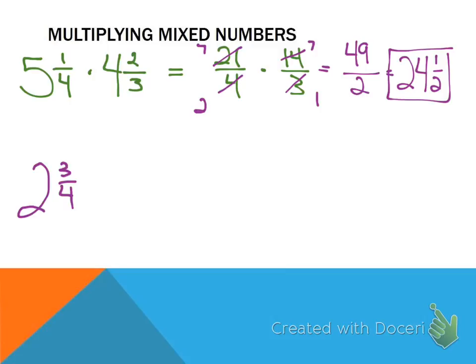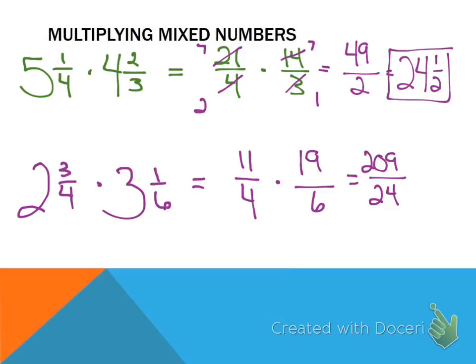So now I want you to do one. So 2 and 3 fourths becomes what? What does it become? 11 over 4 times 19 over 6. Well, you can't cross reduce anything, so you just have to multiply the big numbers. And remember, if that is difficult to find, just enter your fraction 209 over 24, press equals, and then shift S to D button, and it gives you the mixed number 8 and 17 over 24. Raise your hand if you got it. 8 and 17 over 24. Did you get it right?